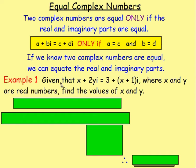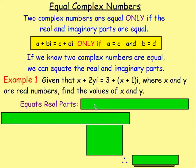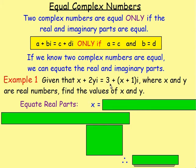Example 1: given that x + 2yi = 3 + (x + 1)i, where x and y are real numbers, find the values of x and y. Because they are equal, the real parts must be equal and the imaginary parts must be equal. Equating the real parts: x = 3. Equating the imaginary parts: 2y = x + 1. We know x = 3, so 2y = 4, and y = 2.